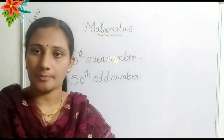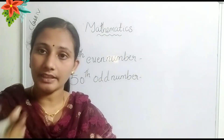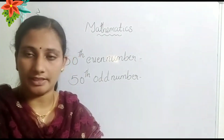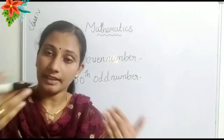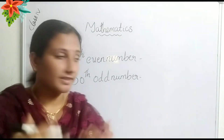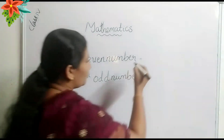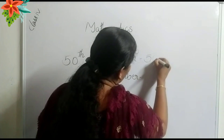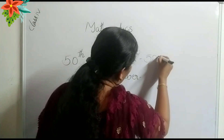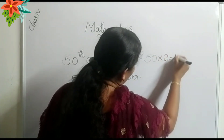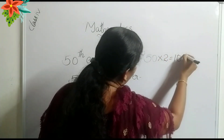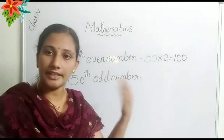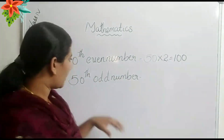Look at one more example: fifteenth even number. Fifteenth even number means the double of fifteen, that is fifteen into two. Fifteen into two — what is the answer? That is thirty. Thirty is the fifteenth even number.